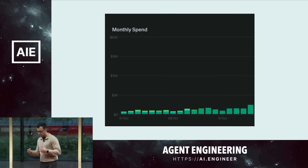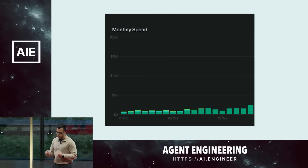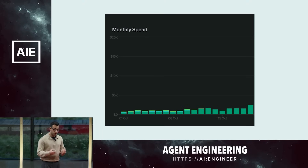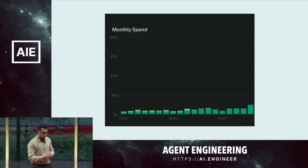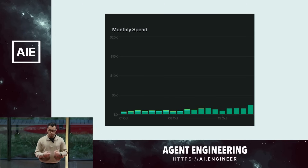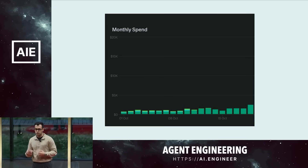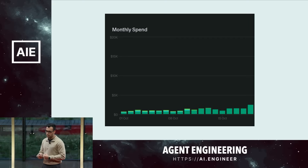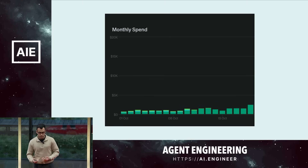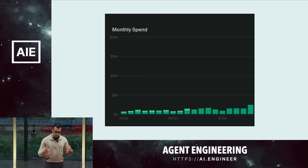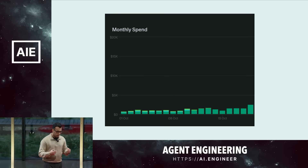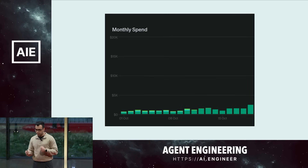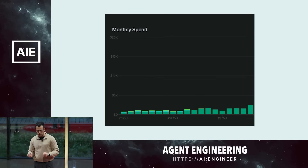We put our heads down, hacked together this agentic workflow using GPT-4, and as expected it worked really well. We tried to expand some of our use cases because the API costs are high, so we wanted to get as much as we could from a single API call. It turned out to be really good at that. This was in production, in a very controlled manner.